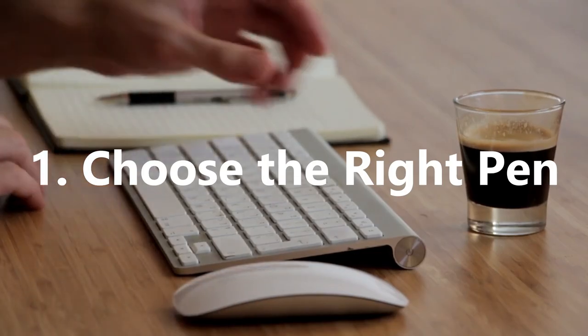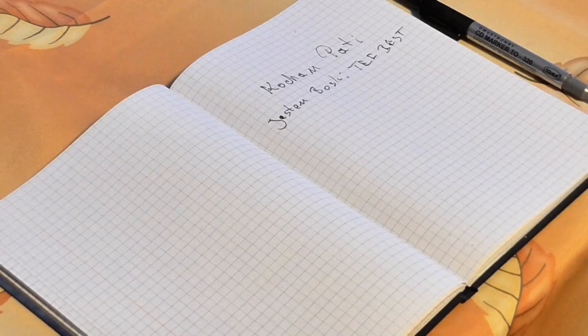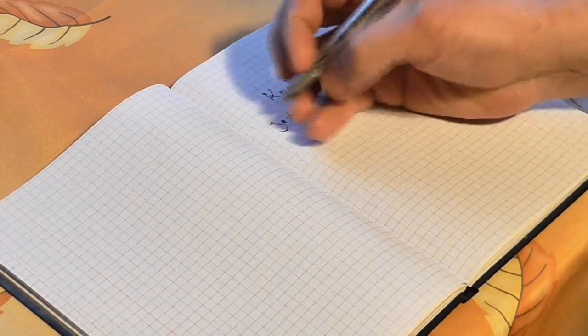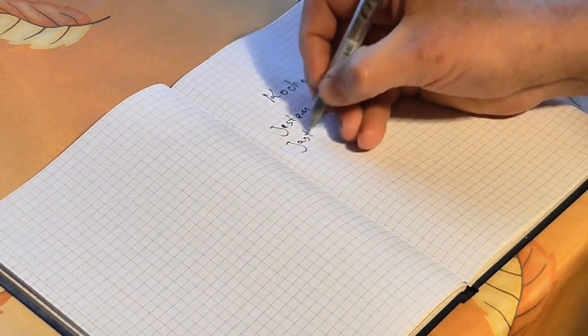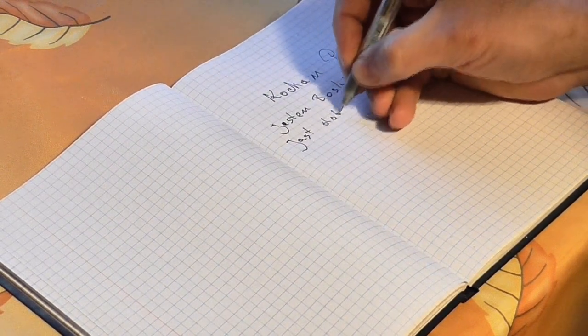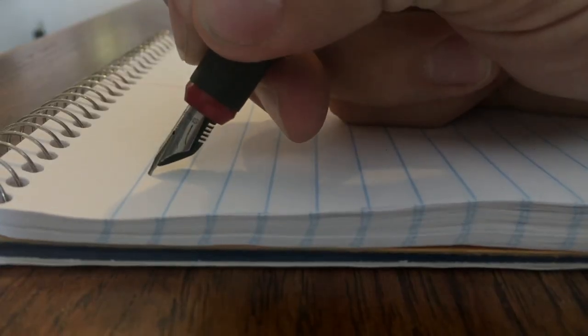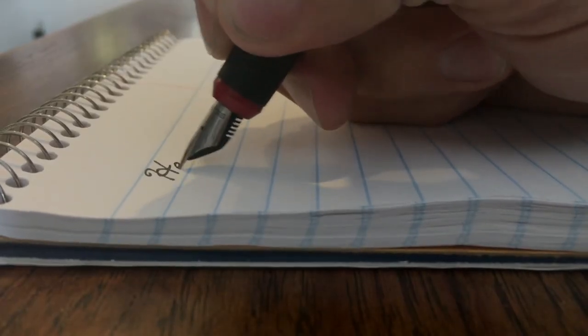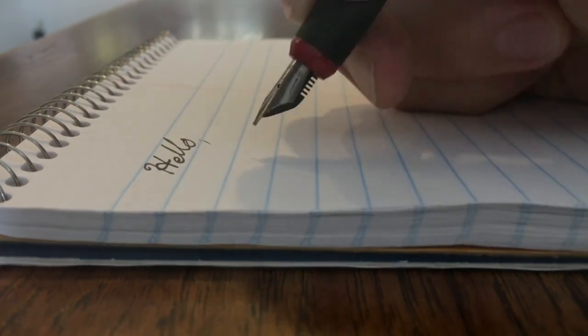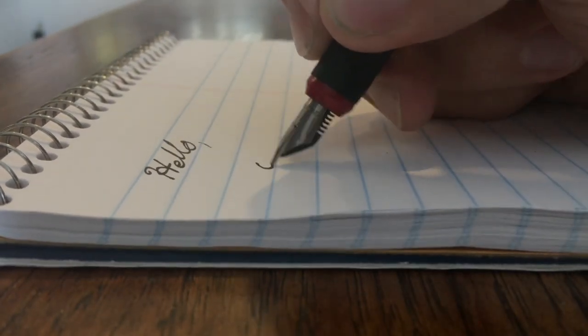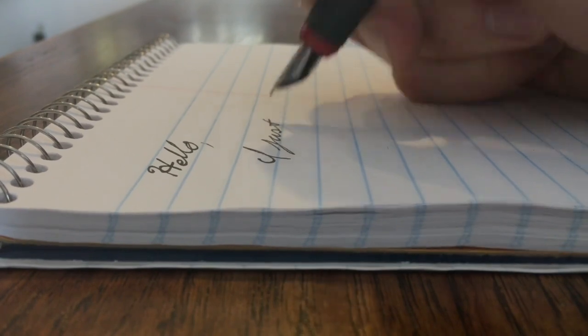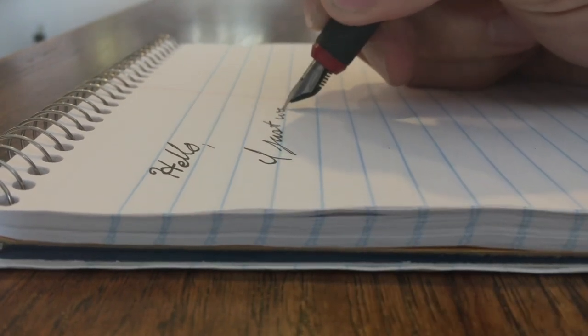Choose the right pen. The first and most obvious step to good handwriting is to use a pen which suits your personal needs and taste. What works for one may not work well for others. For example, I personally don't enjoy writing with a fountain pen and find a ballpoint pen suits my handwriting better. So experiment and try a few different pens to find which one works best for you.